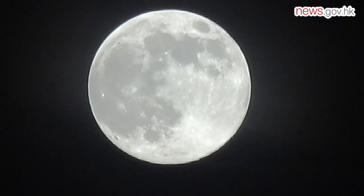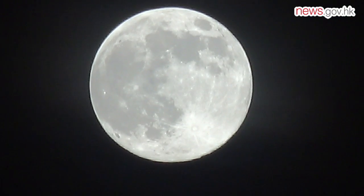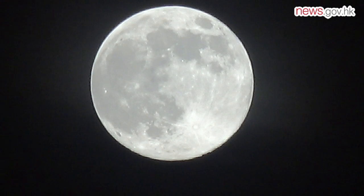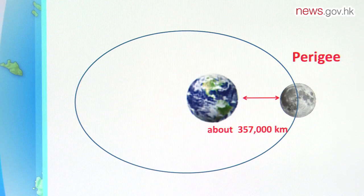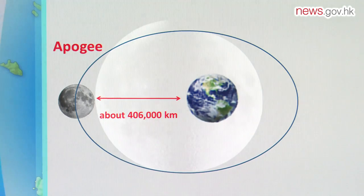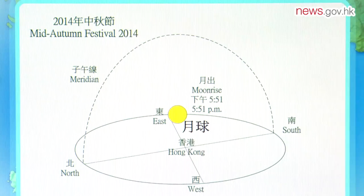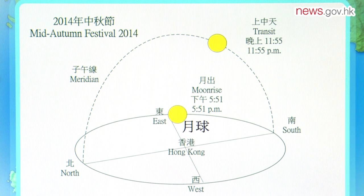Therefore, if the weather condition is good, the moon will still be rather bright and round at night, and also look rather big. The perigee is the closest point to the Earth, and the apogee is the furthest. This photograph shows the difference in the moon's size at these two points. On mid-autumn festival day, the moon will rise at 5:51pm and reach its highest point at 11:55pm.